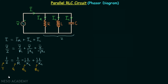From here we can say that Y is equal to G plus j times (BC minus BL). So this is what we have, and now we can plot our phasor diagram.